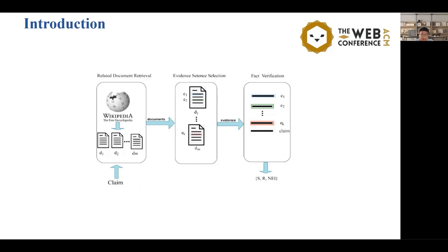For a given claim, the related document retriever retrieves the most relevant documents from the given collection of Wikipedia documents. With the retrieved documents, the evidence sentence selection module selects the top K relevant sentences as evidence that are most relevant to the claim. Finally, the fact verification module takes the claim and the evidence sentences as input to verify the claim.